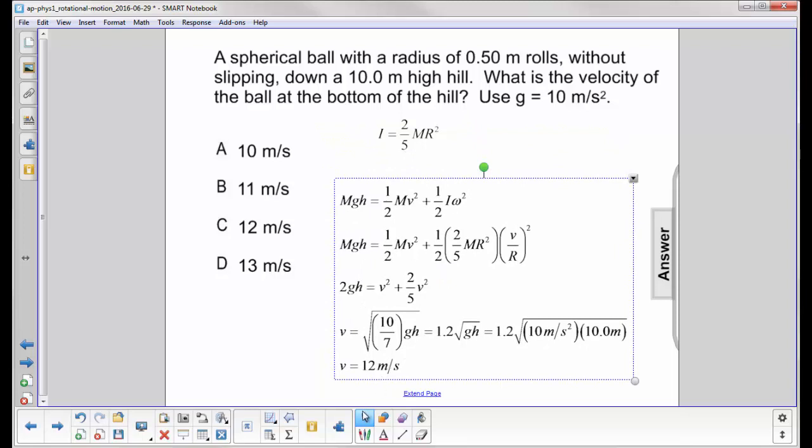So we're going to use conservation of energy. At the top of the hill, it has a gravitational potential energy of mgh. Notice we don't care about the angle of the hill. We just care about where it starts and where it finishes.